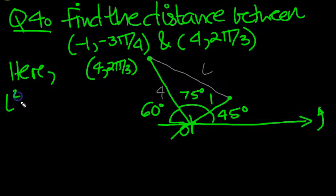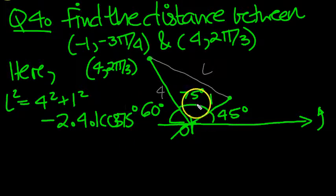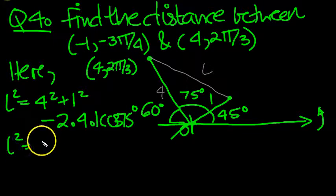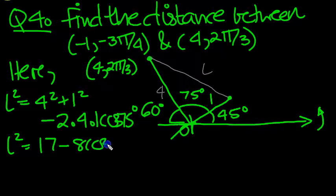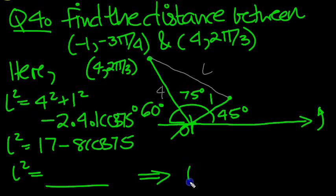So here then, L squared is equal to 4 squared plus 1 squared, minus 2 times 4 times 1, cosine 75 degrees, cosine of the included angle. So L squared equals 16 plus 1 is 17, minus 8 cosine 75, and then we'll get that, and then we can work out L by square root. So let's work that out first then.